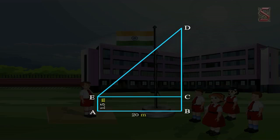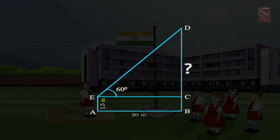He observes the top of the flag post at an angle of 60 degrees. So, angle DEC is 60 degrees. Now we calculate the height of the flag post, i.e. BD, with the help of trigonometric ratios.